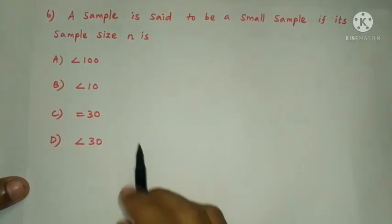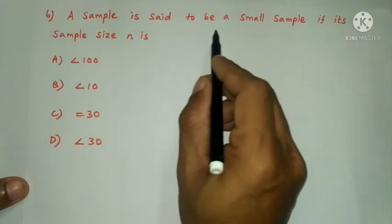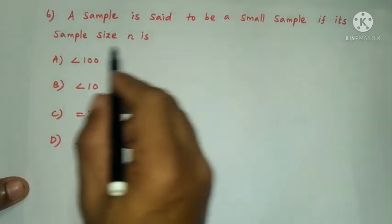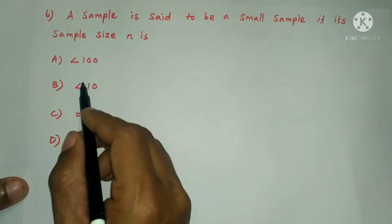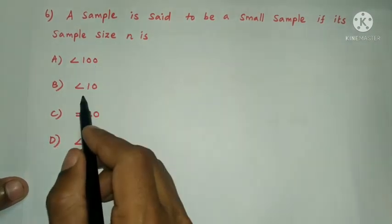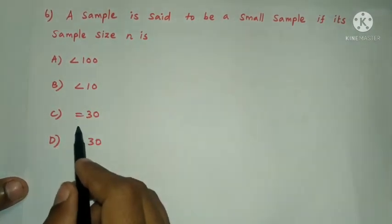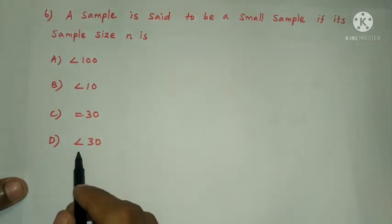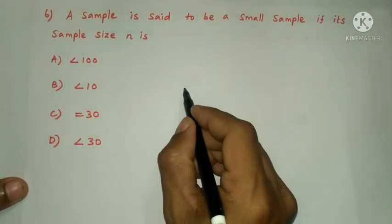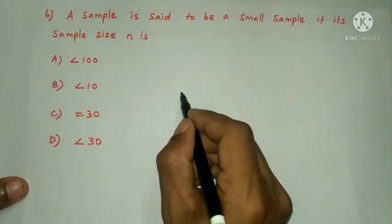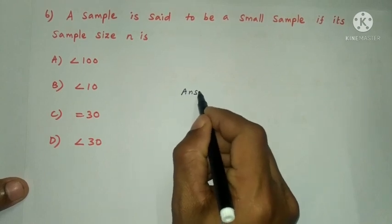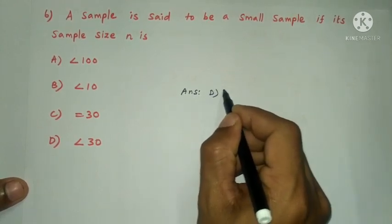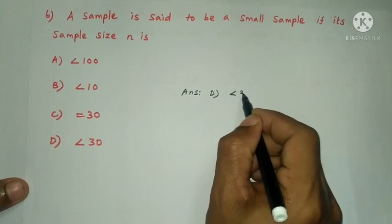Next question: a sample is said to be a small sample if its sample size n is — less than 100, less than 10, equal to 30, or less than 30. The answer is option D: less than 30.